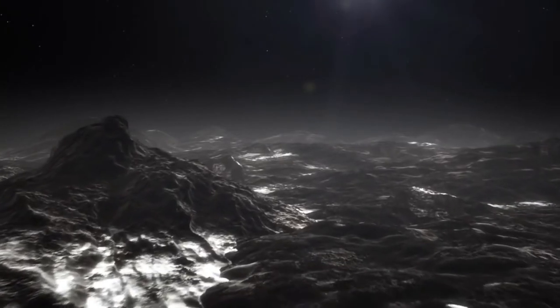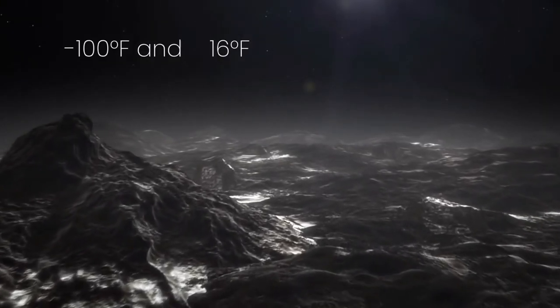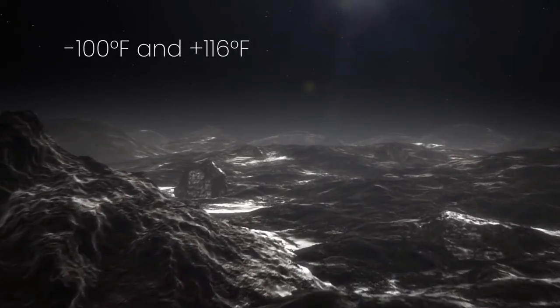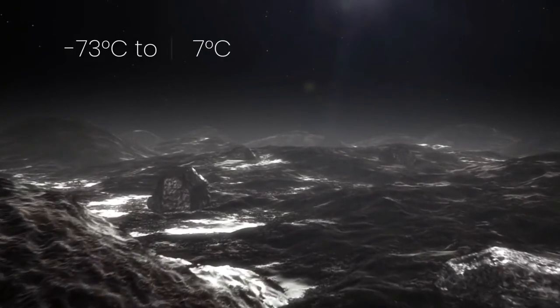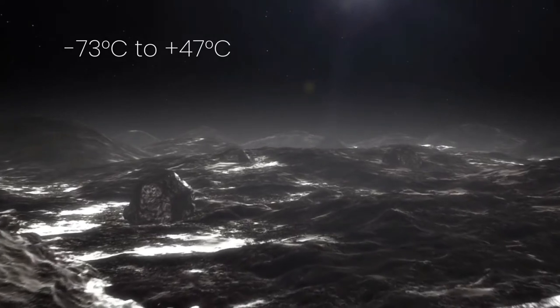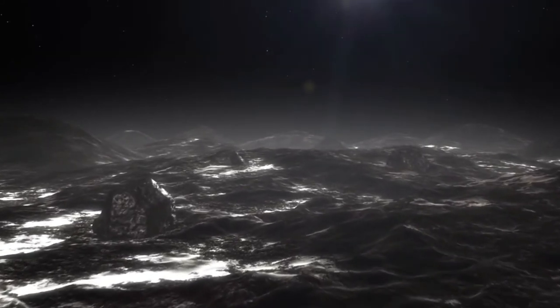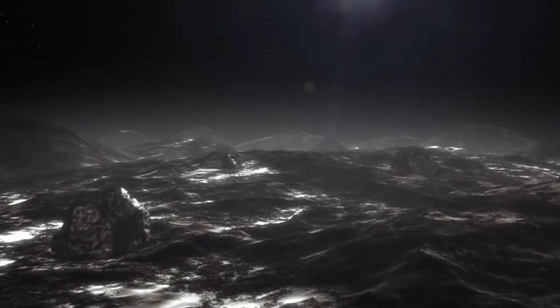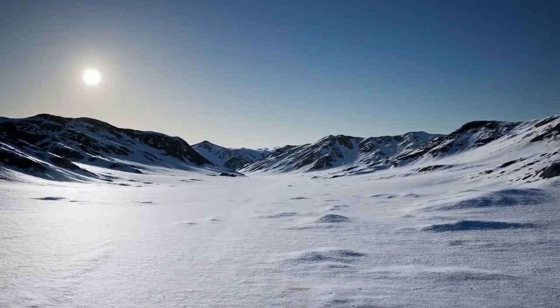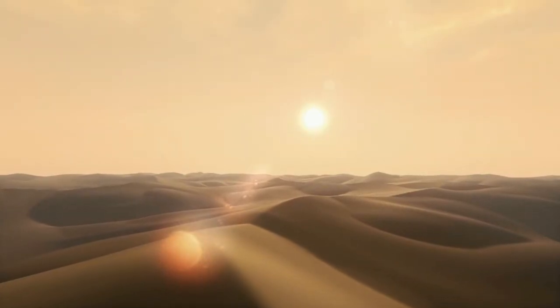Because of this, surface temperatures can range between minus 101 and 116 degrees Fahrenheit, or minus 73 to 47 degrees Celsius. That means the surface could, on average, be colder than Antarctica or hotter than Earth's most blistering deserts.